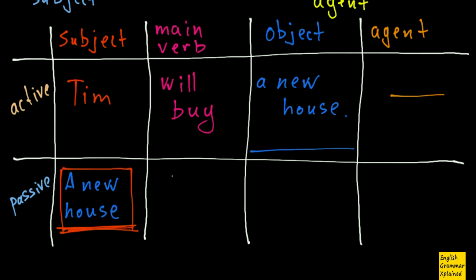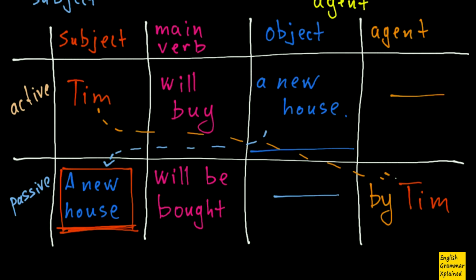In here I don't have any object because my object has gone here and there is nothing here, but I have to put Tim somewhere. And Tim here becomes my agent, by Tim. And Tim here is not a subject, it is my agent. And that's basically that's the whole recipe for my passive. I put object in place of subject, and then I put subject in place of agent.